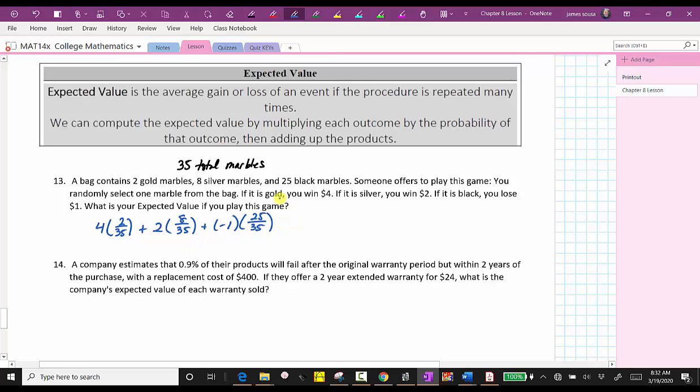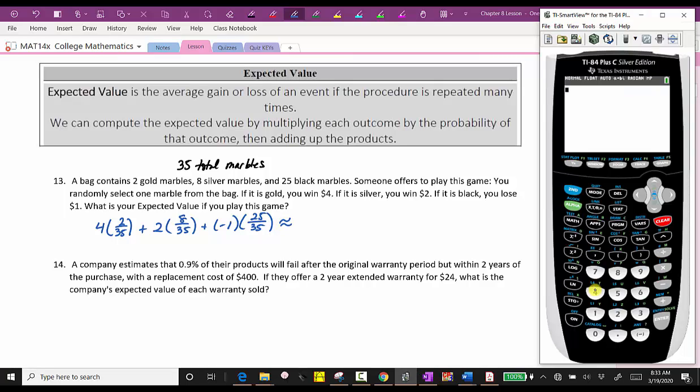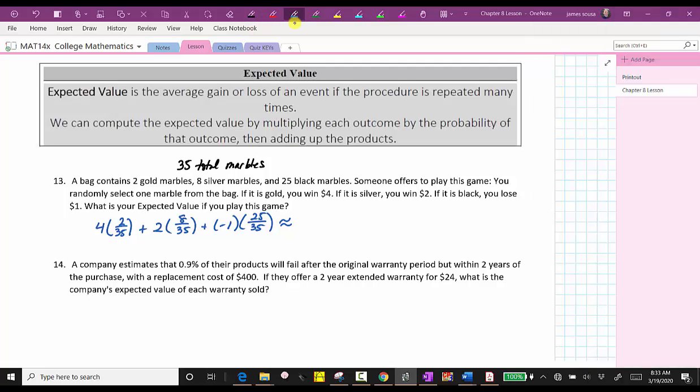The sum of these products will give us the expected value. So going to the calculator, we have four times two divided by 35, plus two times eight divided by 35, and then we can write plus negative one times 25/35, or just minus one times 25 divided by 35. And this is in dollars, and therefore we round to the nearest cent, which gives us negative 0.03, because we have an eight in the third decimal place. So the expected value is negative 0.03 dollars, or negative three cents.